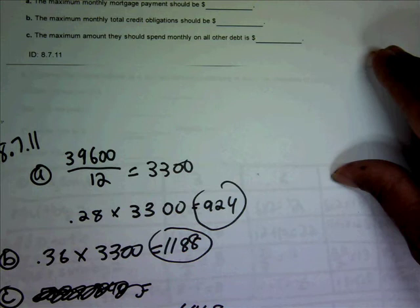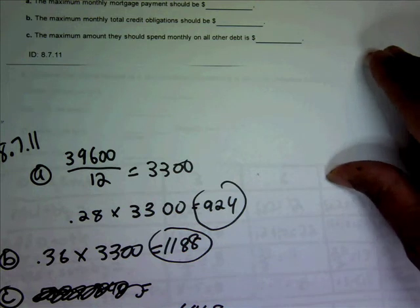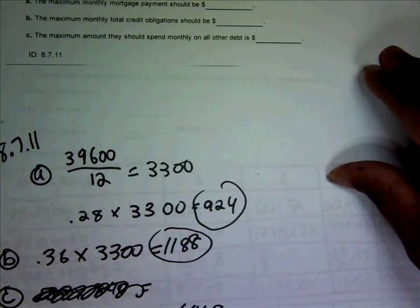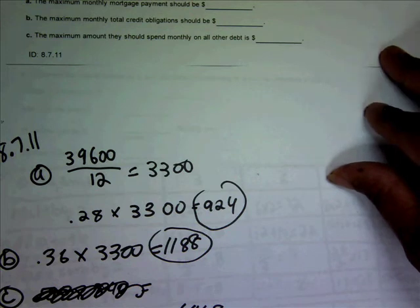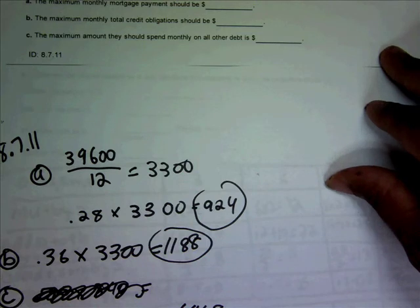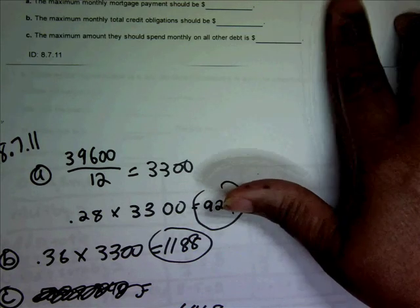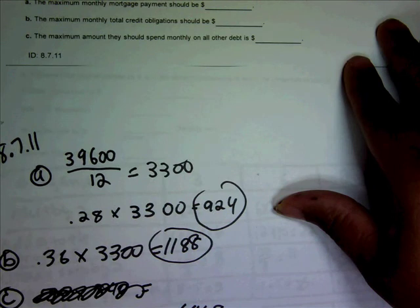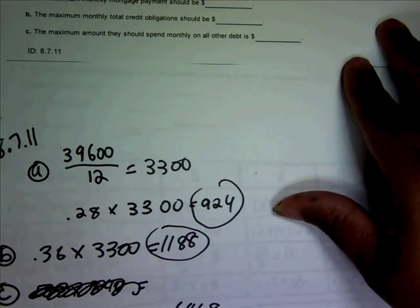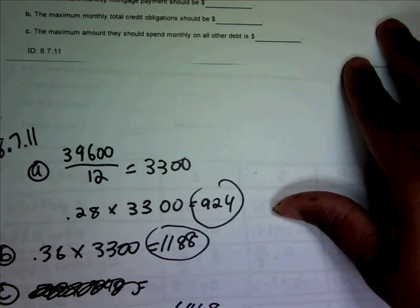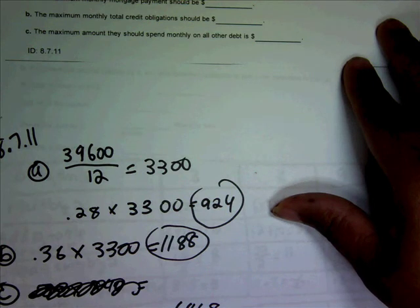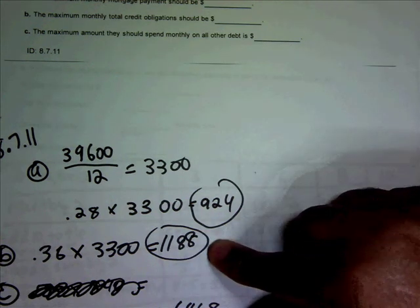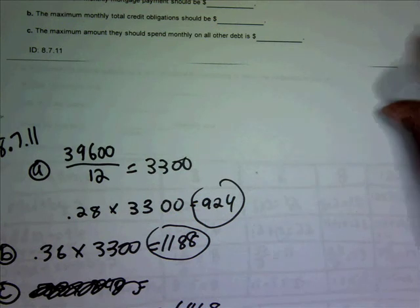So if the family's monthly mortgage payment is 70% of the maximum they can afford, $924, what is the maximum amount they should spend on all other debt? So here's 70% of $924, which is $646. So the maximum they should spend on all other debt will be the difference between that, $1,188 and $646, which is $541.21.